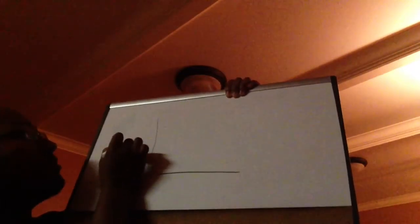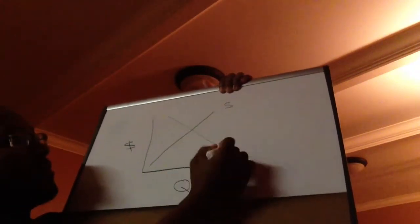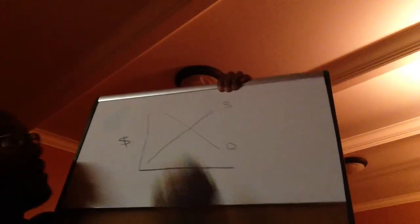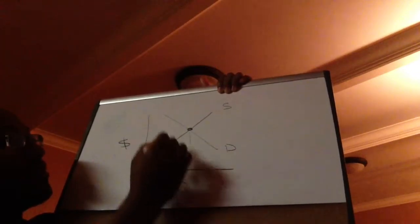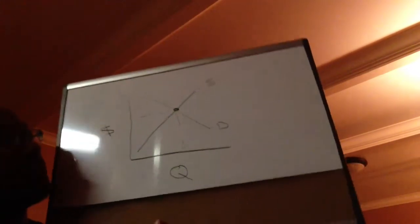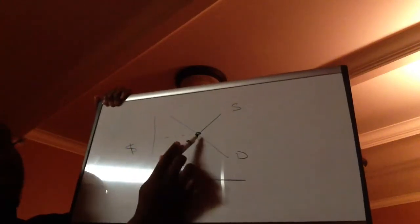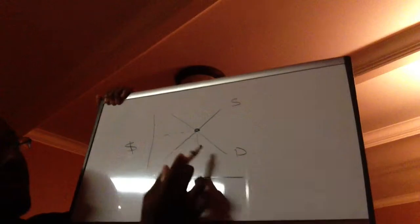In this economy, we have two sets of data. Here we have the price level, and here we have the quantity. Here is our supply curve. Here is our demand curve. Here is our equilibrium point, which means that the exact number of products produced is the exact number of products consumed, where supply meets demand.